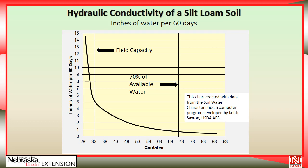A second chart shows hydraulic conductivity of a silt loam soil — essentially how fast water moves down through the soil profile — measured in inches of water per 60 days, roughly the average irrigation season for corn in Nebraska. At field capacity, about five inches of water will deep percolate over those 60 days. However, if we get just one layer down to 70% of plant available water, deep percolation drops to under one inch, a much better target.